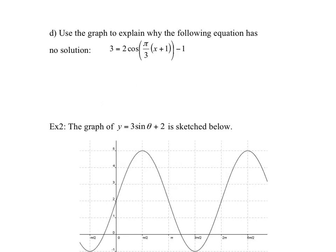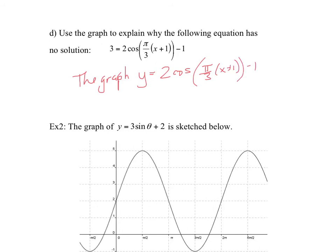On the next page, we use the graph to explain why the equation equal to y = 3 has no solution. Looking at the function we sketched, the graph never reaches a y-value of 3. Therefore, the graph y = 2cos(π/3 · x + 3) − 1 never crosses y = 3, just like we drew a straight line in the previous example — that line is never crossed, so there is no solution.